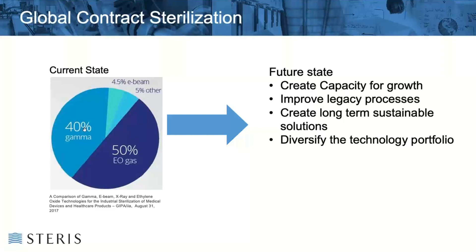In terms of capacity, taking gamma radiation as an example — gamma radiation currently constitutes approximately 400 million Curies globally. The cobalt source decays and approximately 50 million Curies are needed each year just to replenish the source and stand still. If one considers the industry grows at 10 to 12%, that's another 50 million Curies needed just to accommodate that growth — collectively 100 million Curies of radiation capacity needed each year from a limited cobalt-60 resource. As an industry, we must identify alternative sources of capacity, and hence our motivation within STERIS is that we believe X-ray offers the most accessible capacity as a like-for-like alternative to gamma.